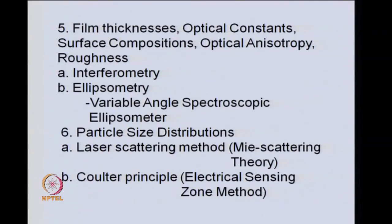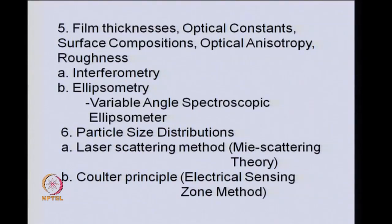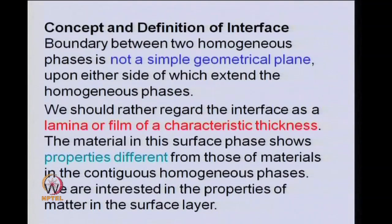Then one needs to measure film thicknesses, optical constants, surface compositions, optical anisotropy and roughness. One uses interferometry, ellipsometry — especially variable angle spectroscopic ellipsometry. Particle size distributions can be measured based on either laser scattering methods, which in turn are based on Mie scattering theory, and the Coulter principle or electrical sensing zone method.